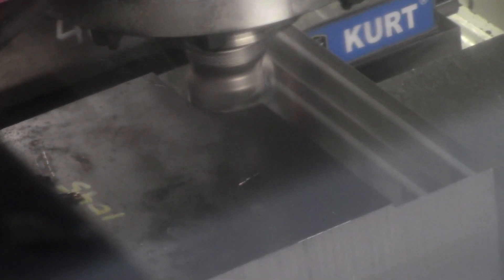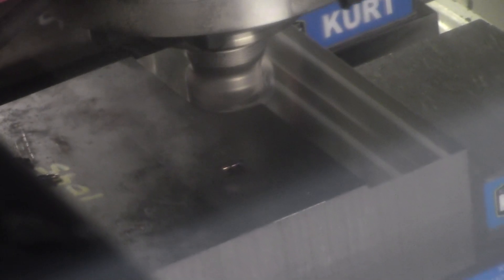The roughing operation is meant to remove a large amount of material quickly. Using a large diameter tool, often an indexable tool, large depth or width cuts are made through the material, resulting in a part roughly in the shape of the finished part.